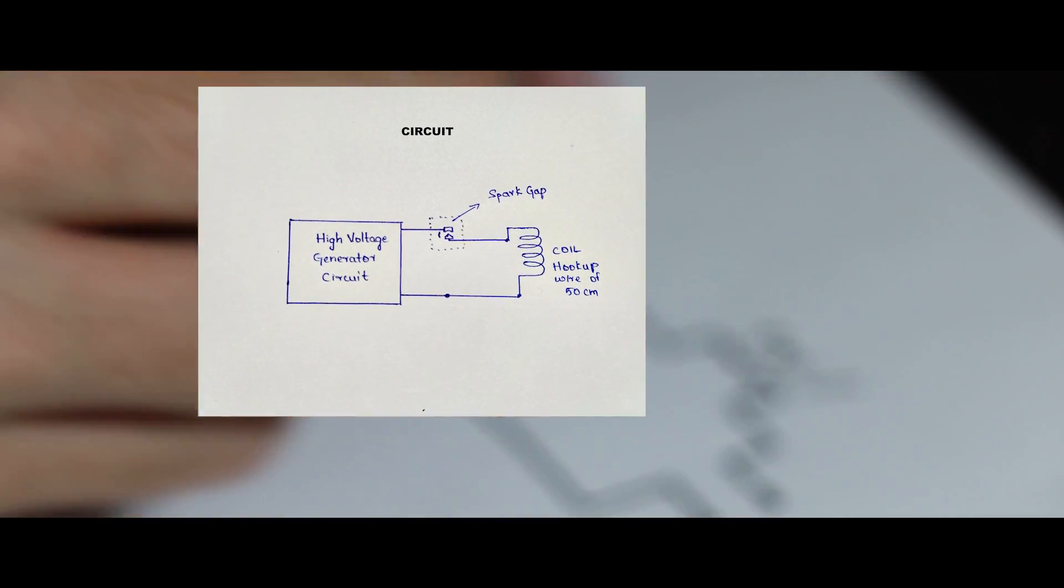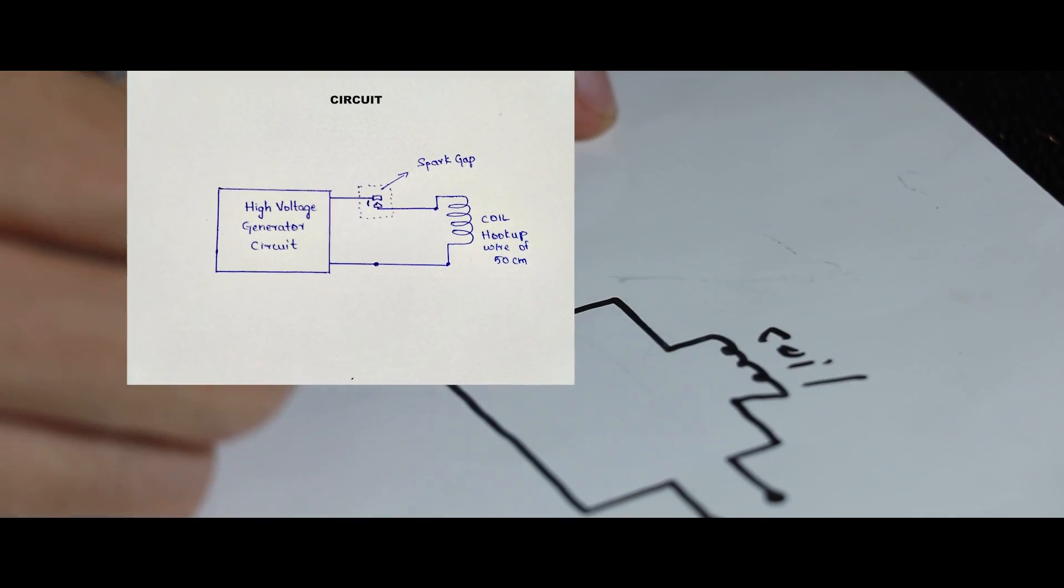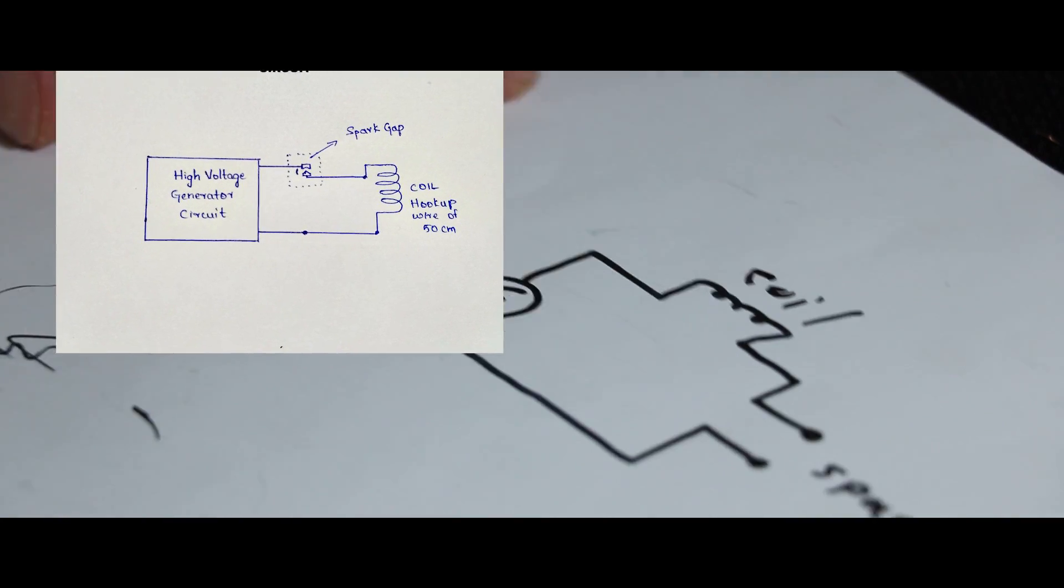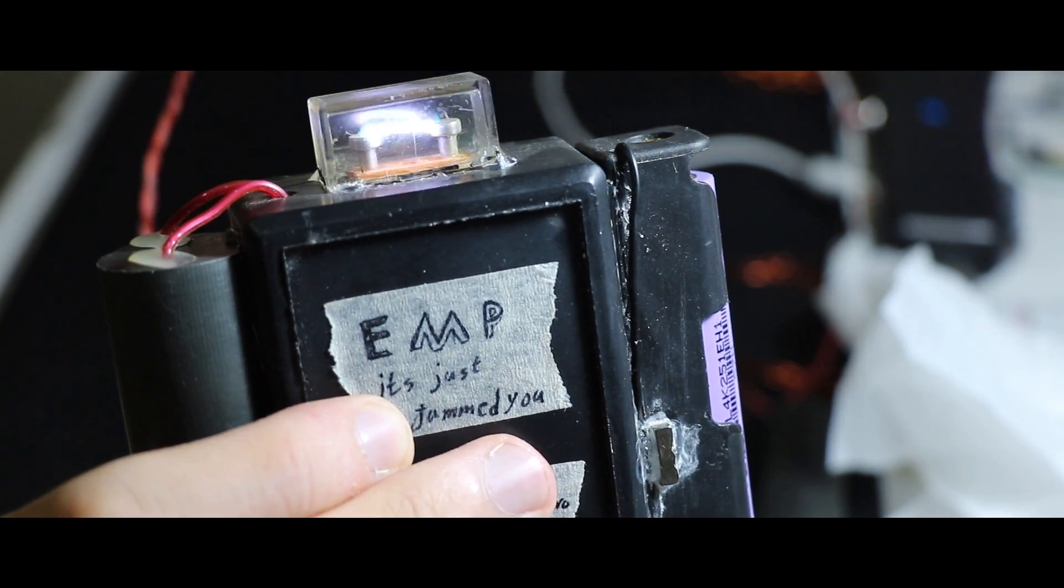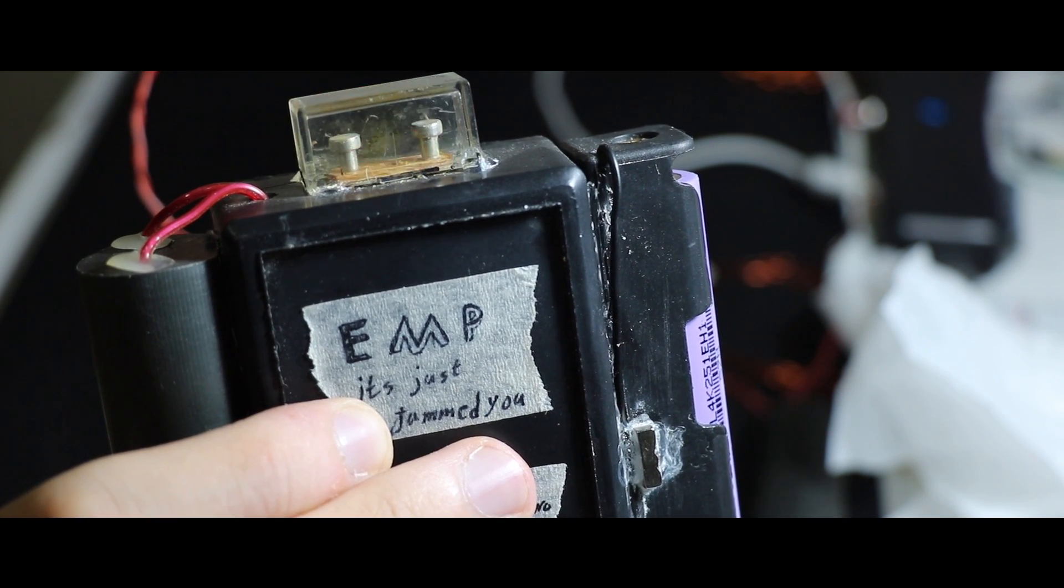A spark gap consists of an arrangement of two conducting electrodes separated by a gap, usually filled with a gas such as air, designed to allow an electric spark to pass between the conductors.